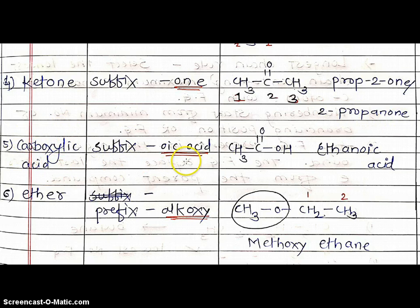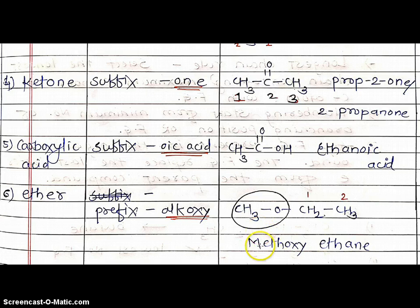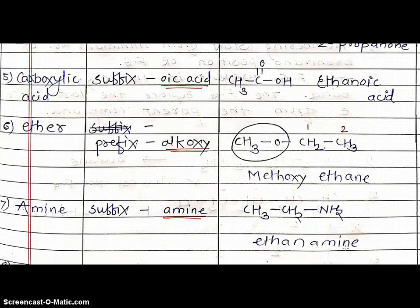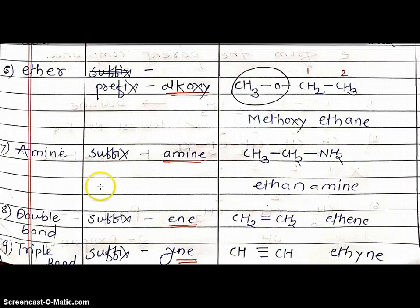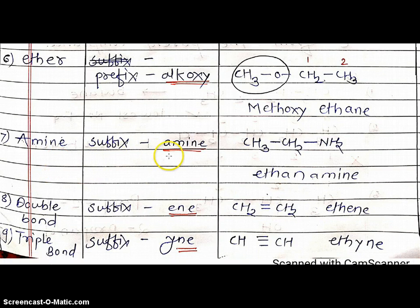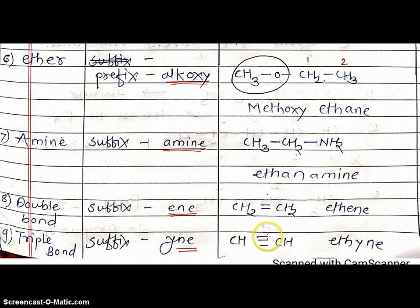Carboxylic acid — add suffix -oic acid; CH3C=OOH — ethanoic acid. Ether — add prefix alkoxy group; CH3OCH2CH3 — minimum carbon gets prefix, maximum carbon gets suffix; name is methoxyethane. Amines — add suffix -amine; CH3CH2NH2 — ethanamine. Double bond — add suffix -ene; CH2=CH2 — ethene. Triple bond — add suffix -yne; CH≡CH — ethyne.